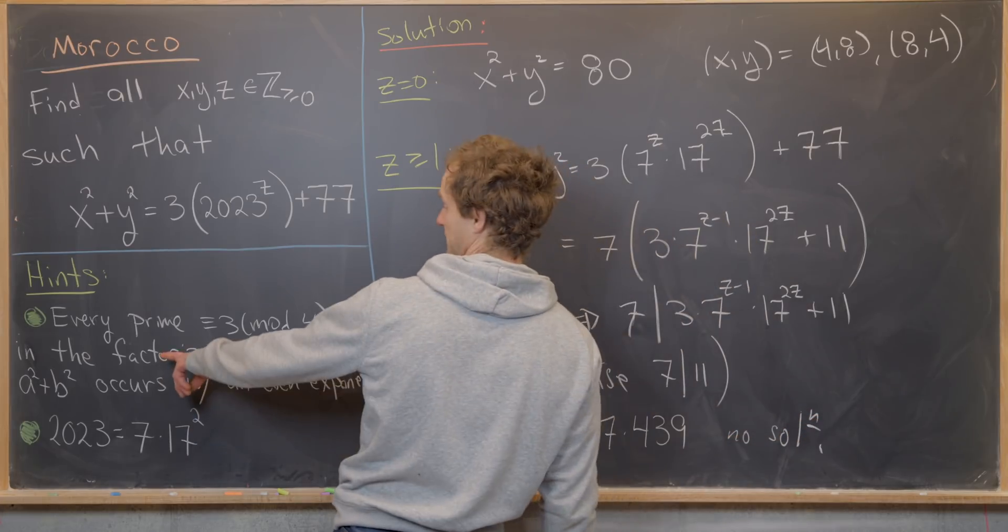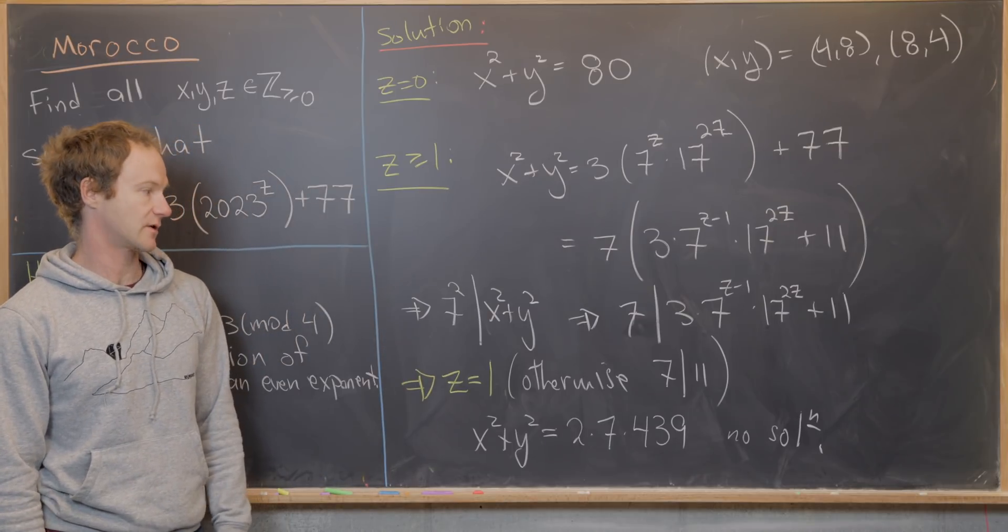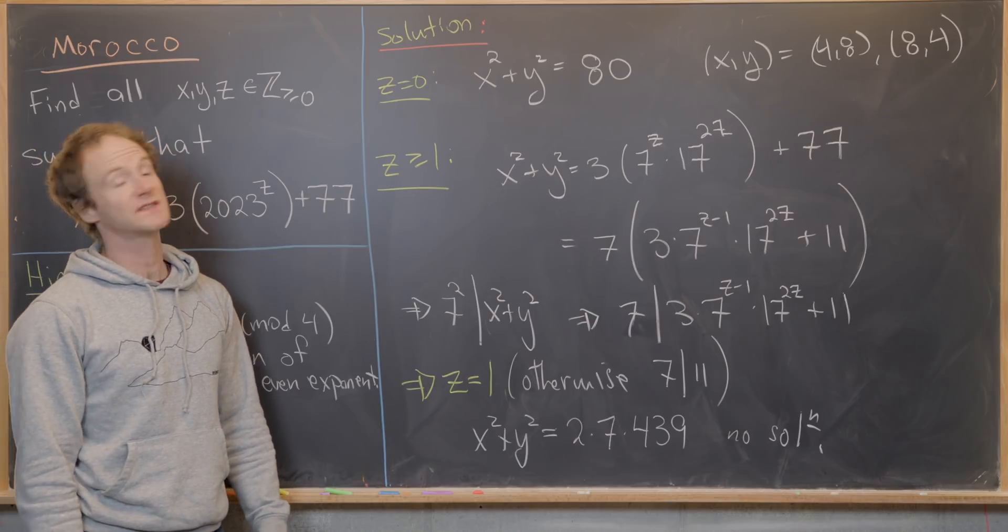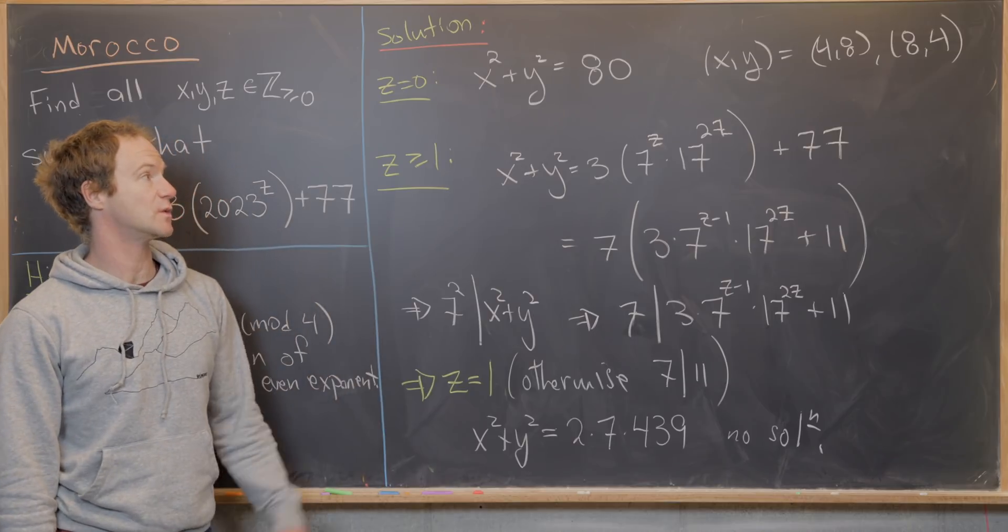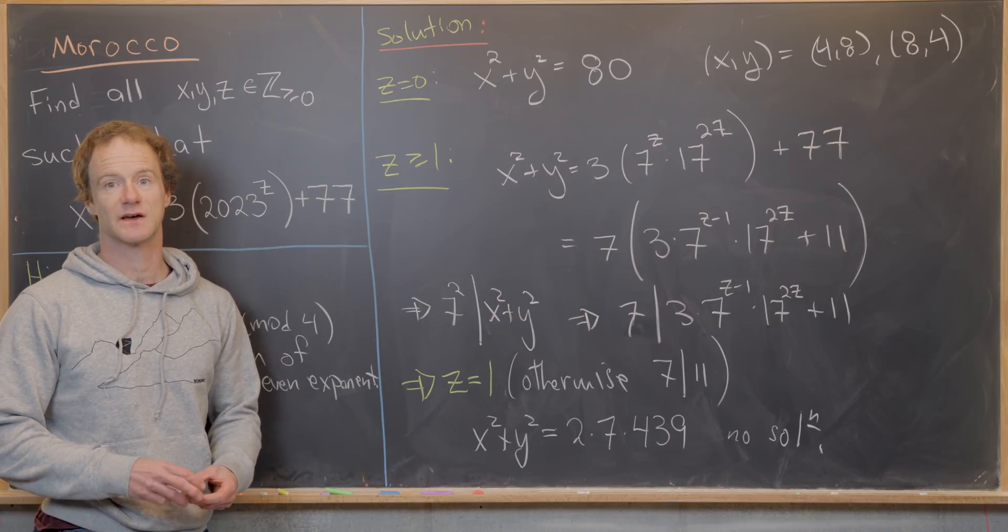Again, by this fact that we had over here. So putting this all together, we see that z equals 0 provides us with the only solution. And that solution occurs when x equals 4 and y equals 8 or vice versa. And that's a good place to stop.